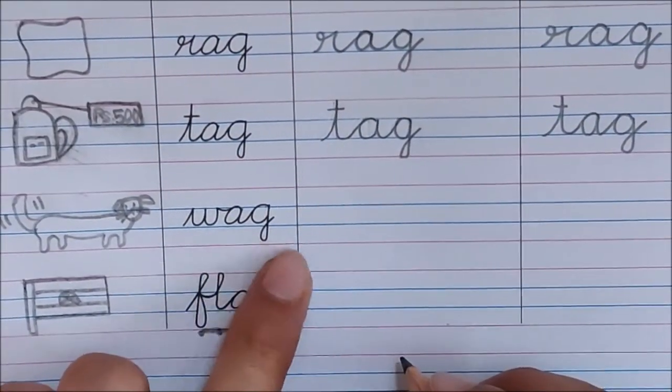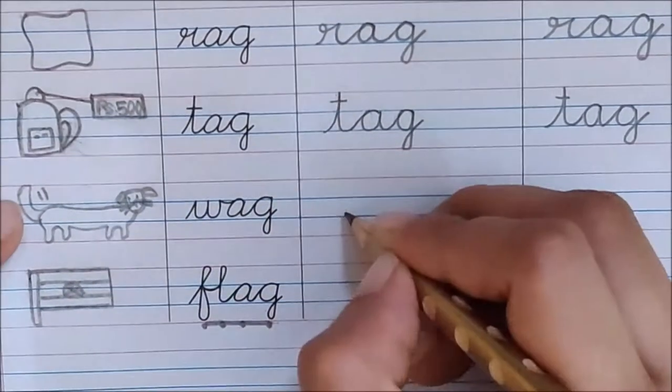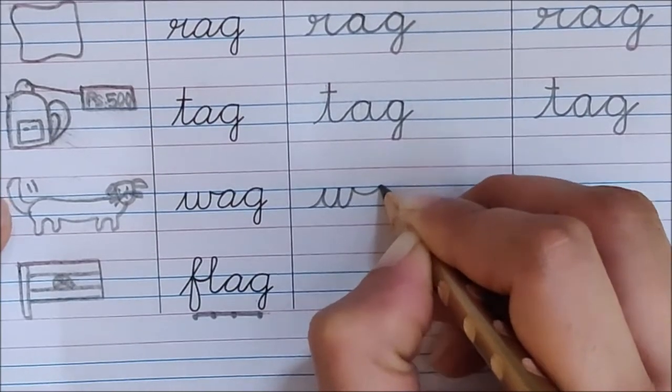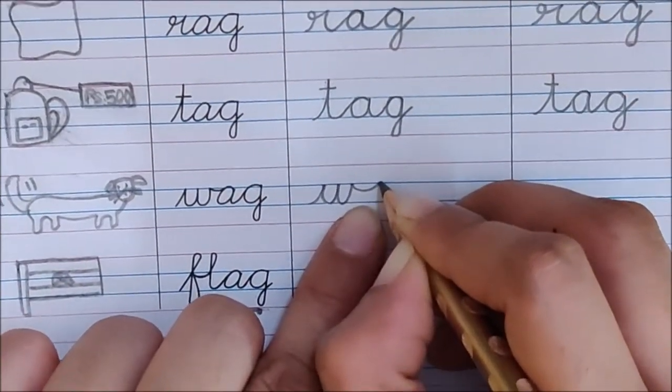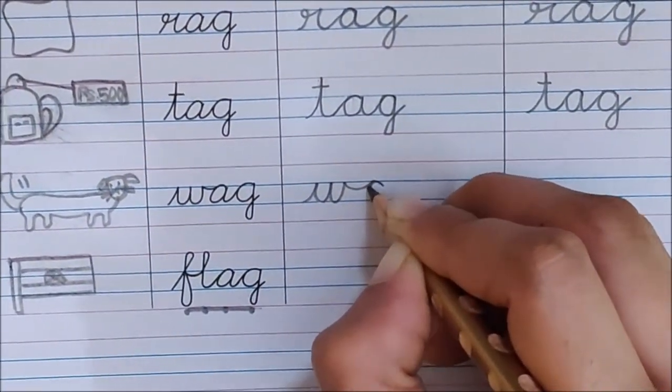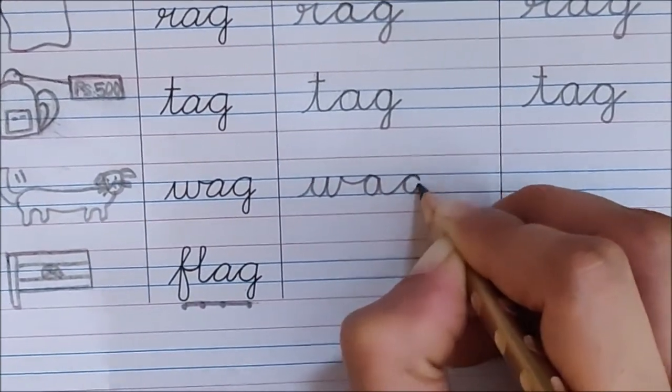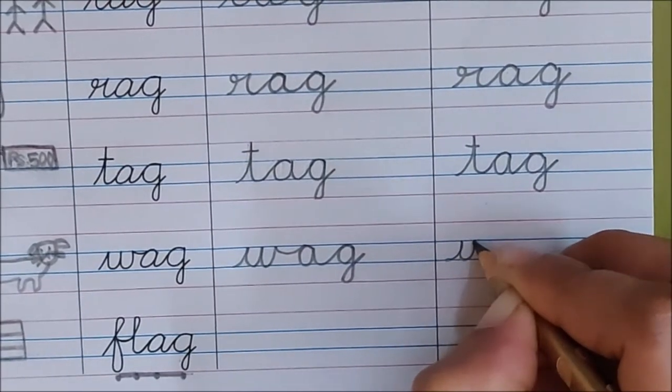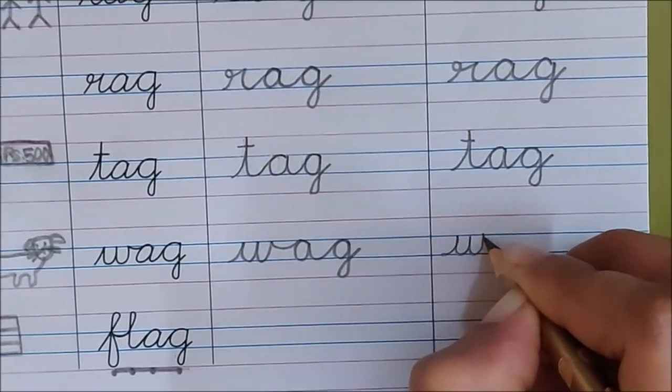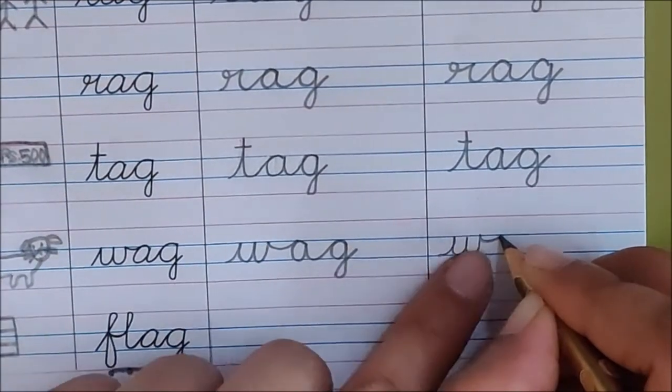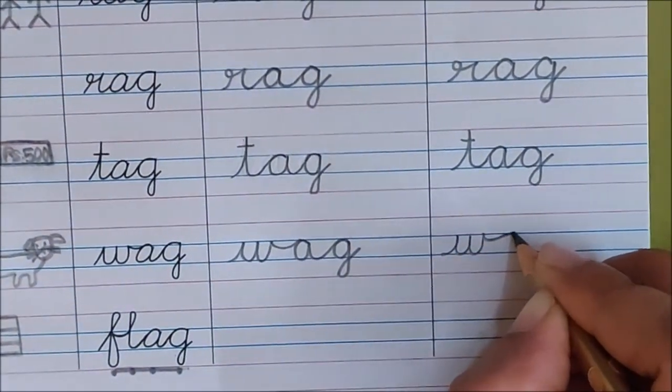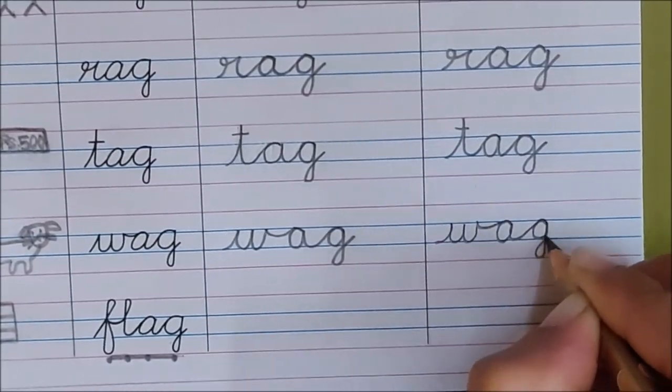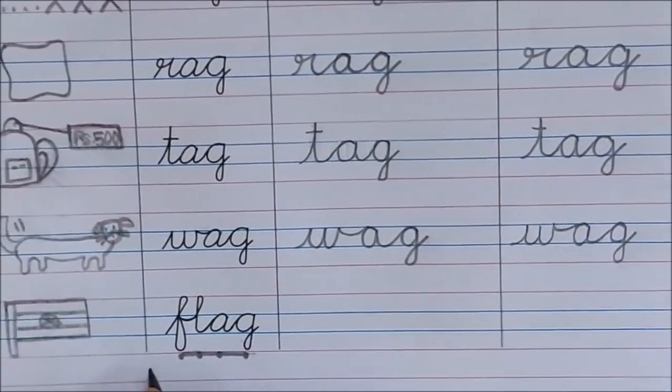Next word. W, A, G, wag. So say and write. W. See children, the smiley is up. It is not touching the lower blue line. Now bend a little and write down. A, G, wag. W. See, the smiley is up, not touching the lower blue line, and the smiley is long also. A, G, wag.